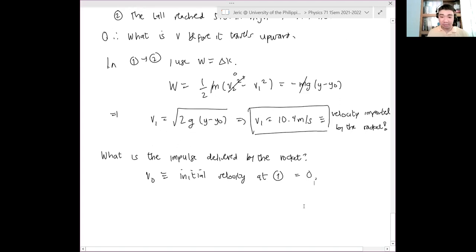Therefore, the impulse now is just J equals change in momentum. Again, this is different from v2. So this is simply m times v1 minus v0. But again, v0 is zero. So this is zero. And therefore,